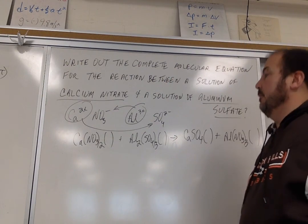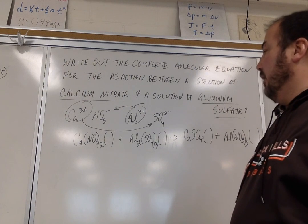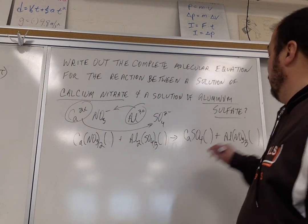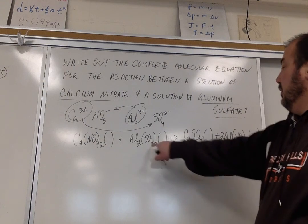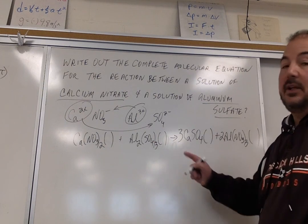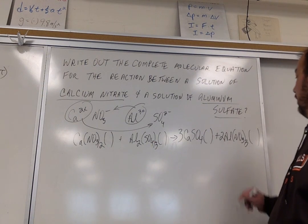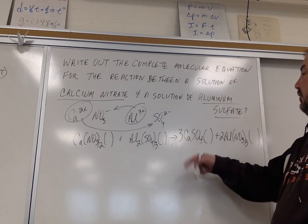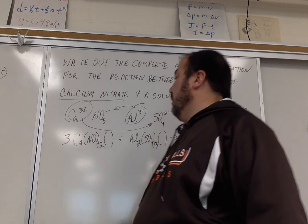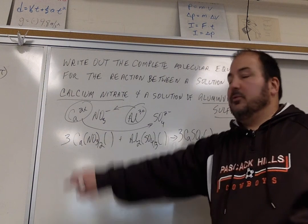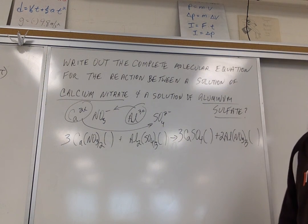Now we're going to say that, let's see, two aluminums, I'm going to put a two here, three sulfates. Now I'm going to put the three as a coefficient out front here. That gives me six nitrates. I have two here, so that'll give me three. And I have three calciums, three calciums. So now it is balanced.